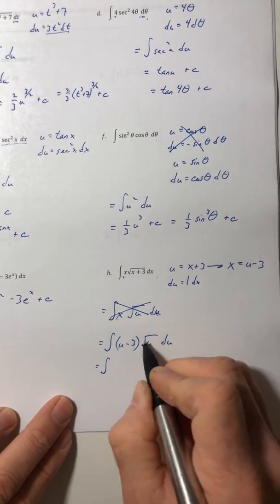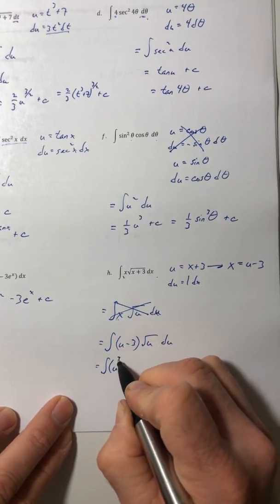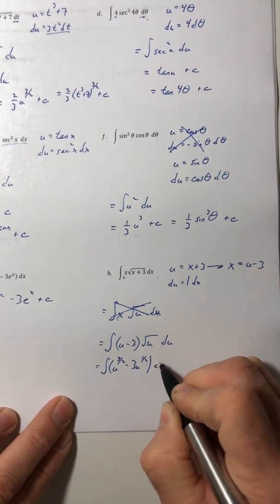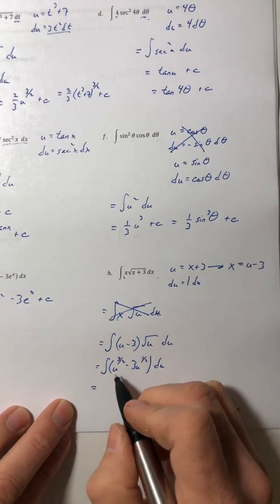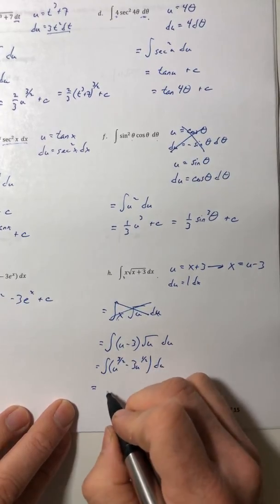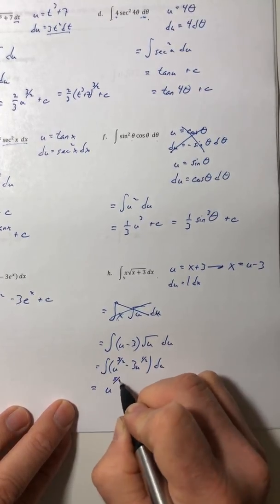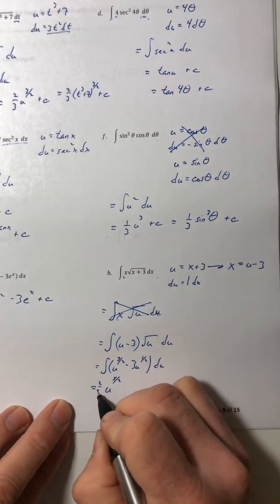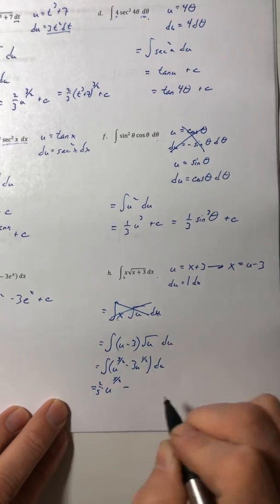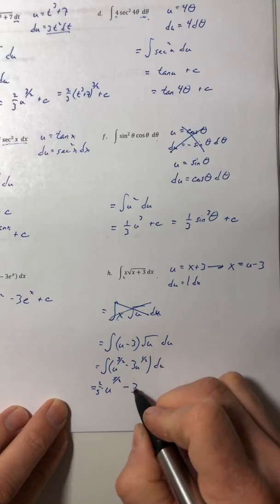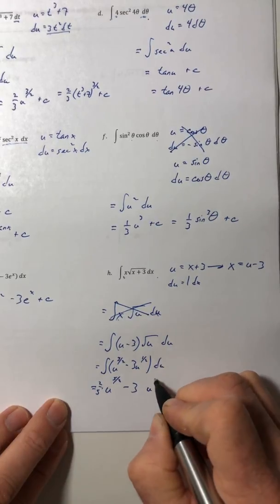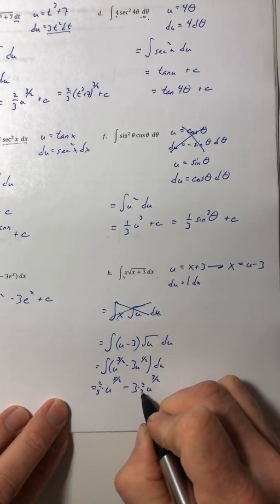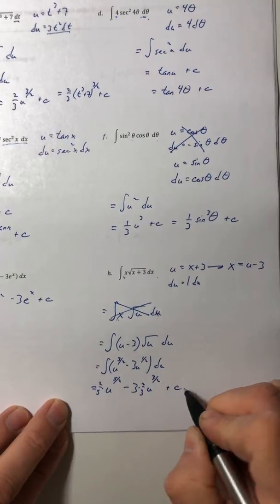So let's just multiply this out and distribute, so u to the three halves minus 3u to the one half, and let's integrate that. So add one to the exponents, divide by the new exponent or multiply by its reciprocal. So that would be three, and then u to the three halves, and then multiply by its reciprocal, the two thirds, plus c.